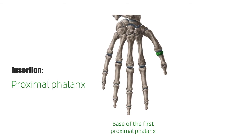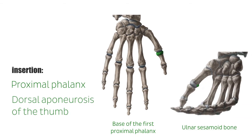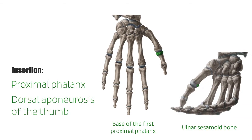The common tendon attaches distally to the proximal phalanx and the dorsal aponeurosis of the thumb via the ulnar sesamoid bone. The adductor pollicis is the deepest of all thenar muscles.